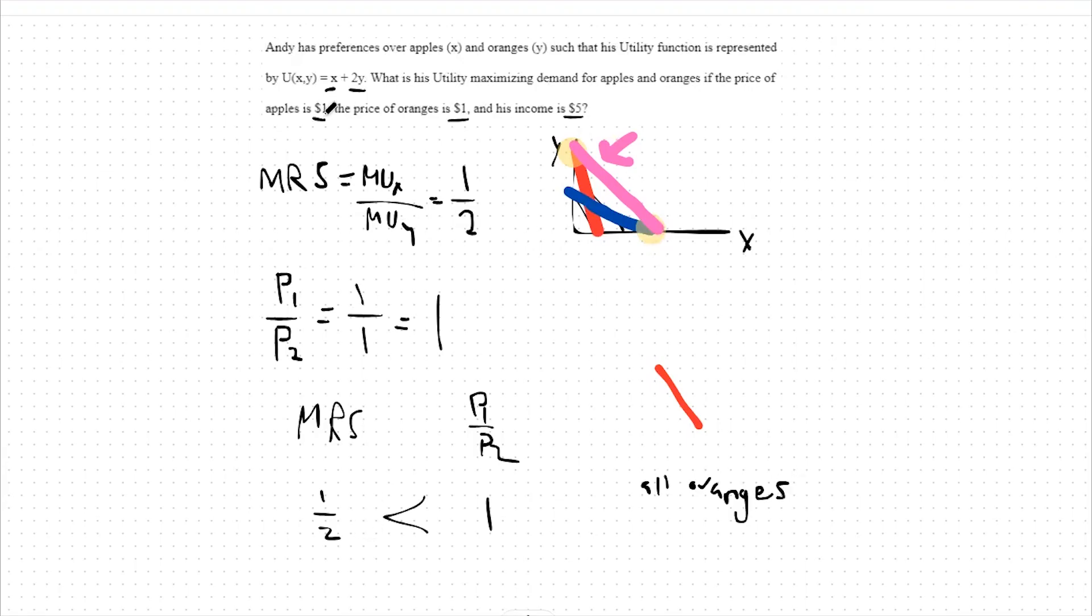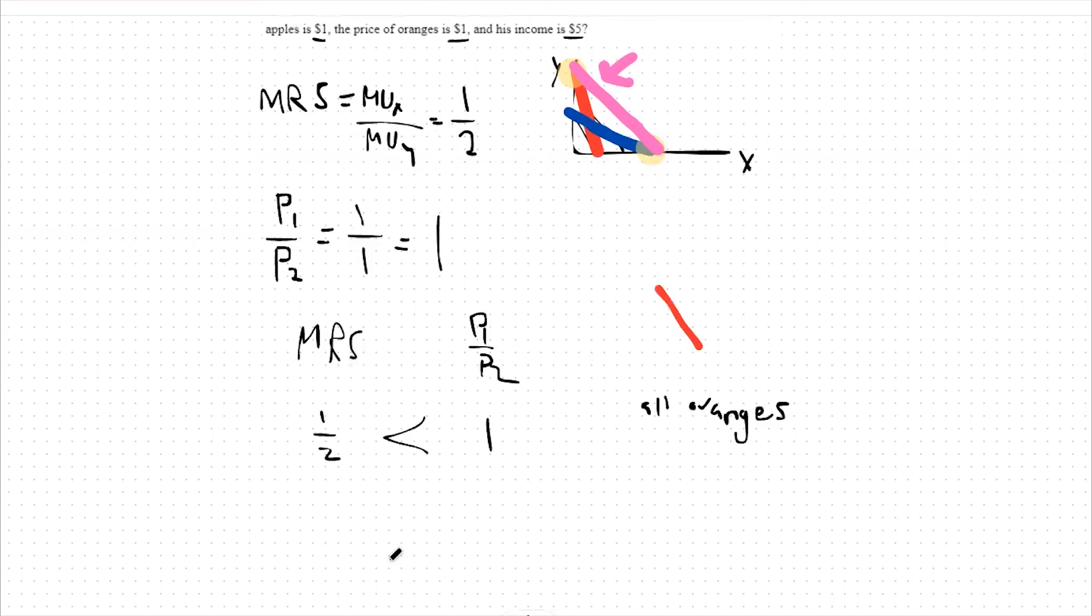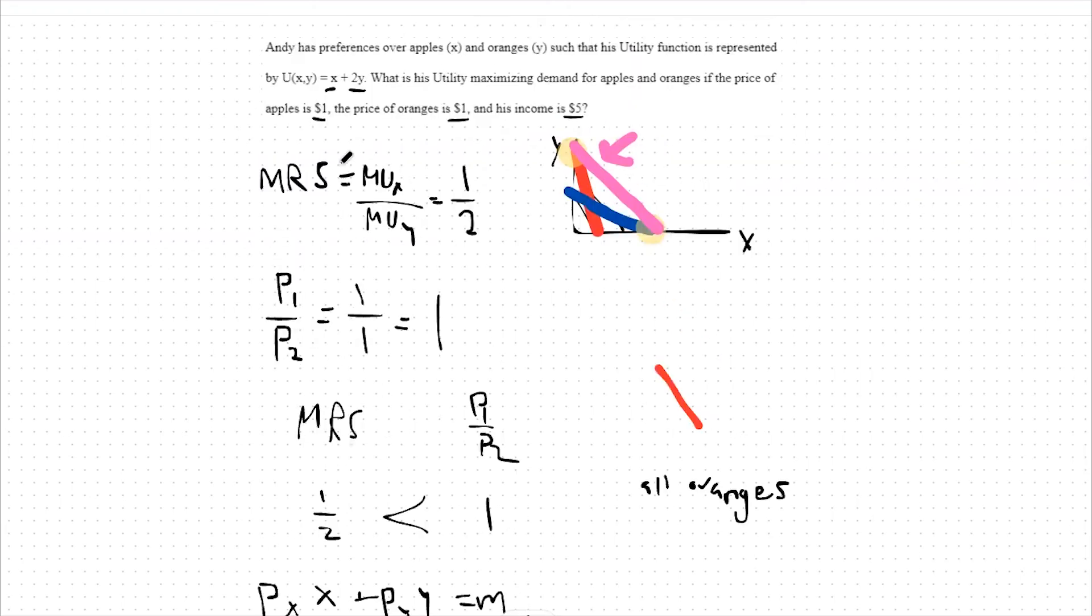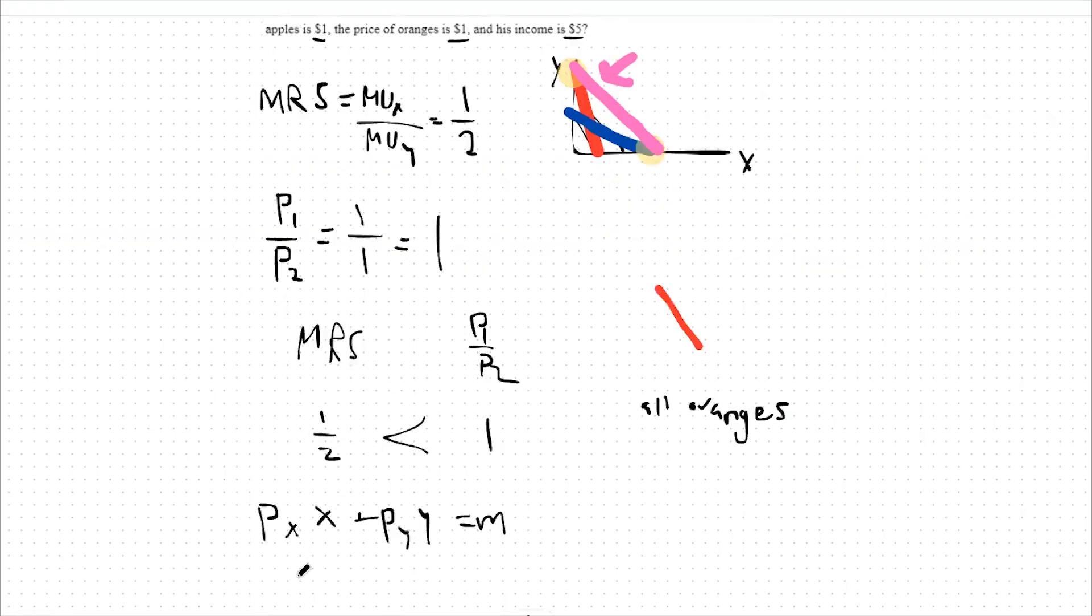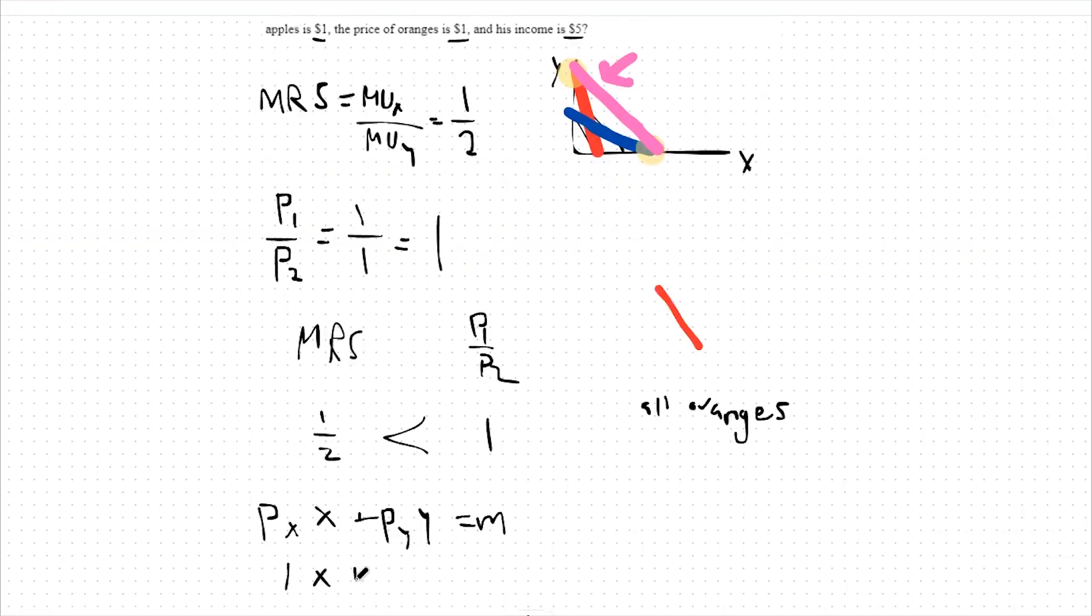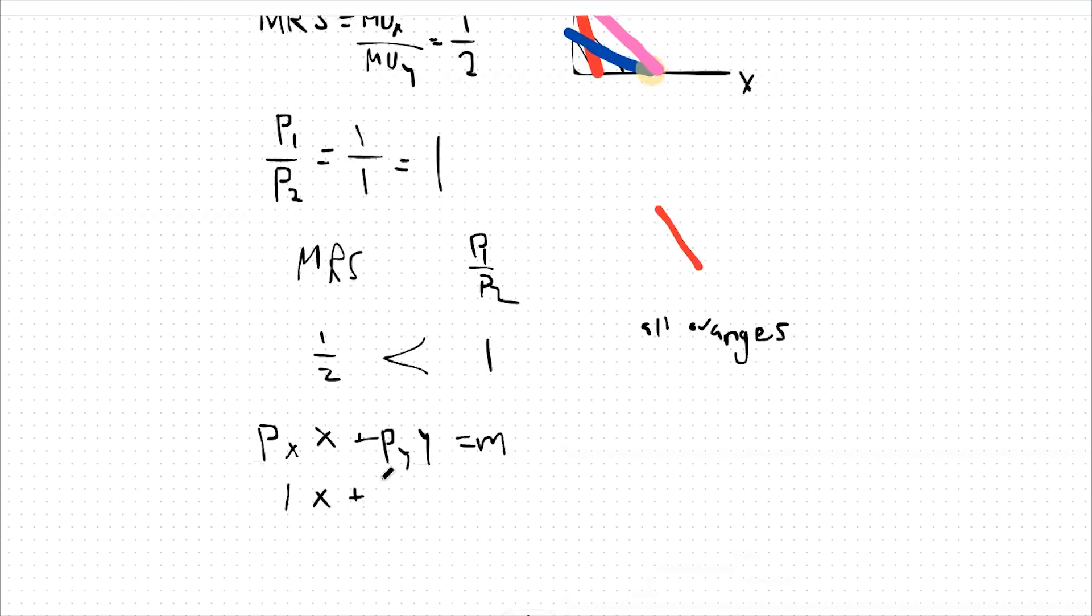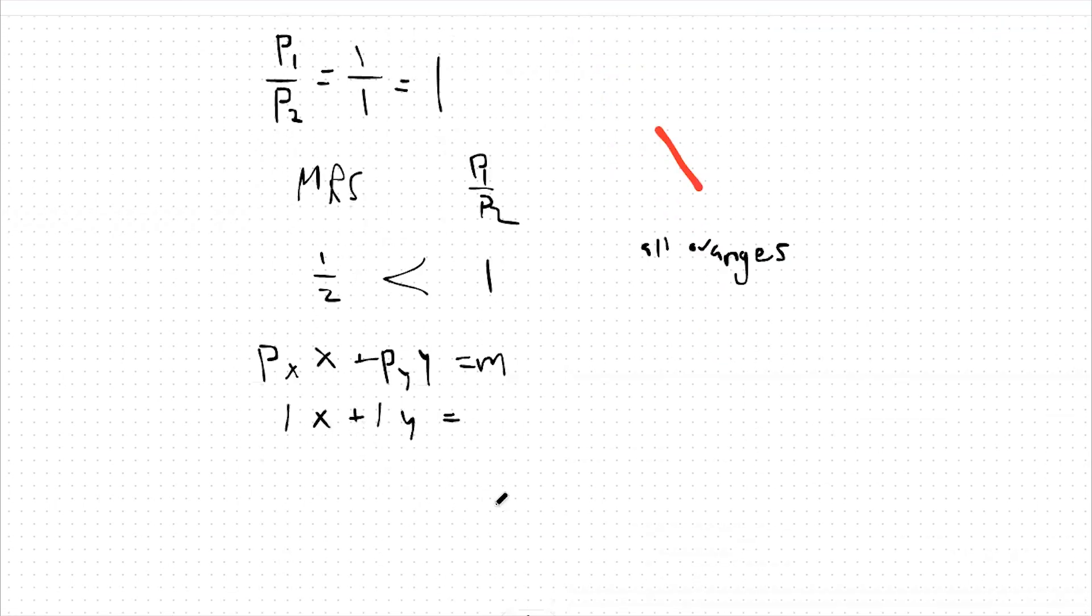To look at the math, let's build out our budget constraint. Our budget constraint is represented by px times x plus py times y equals our income. The price of good x, or apples, is one dollar. The price of good y, or oranges, is also one dollar. And our income is five dollars. So x plus y equals five.